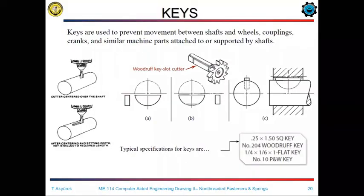Keys are the machine elements used for rotational force transmission between two elements called the shaft and the hub. The key is a small machine element which secures the power transmission. In case of excess or peak power transmission to the shaft or hub, we desire breakage mostly on the key rather than the shaft or hub.